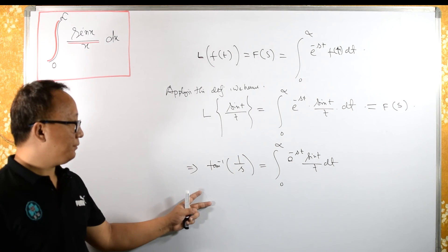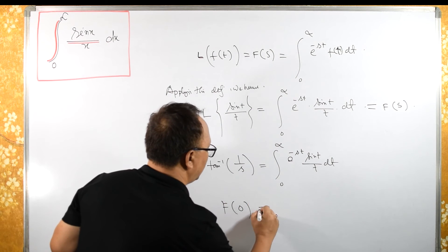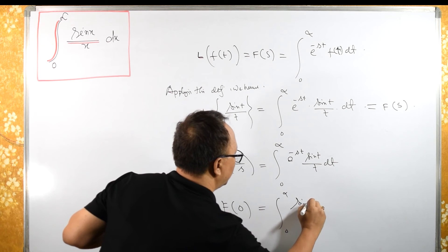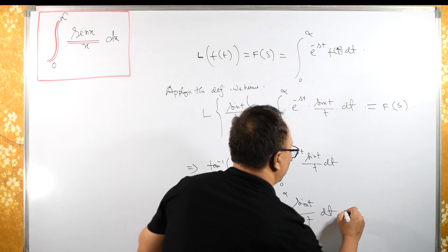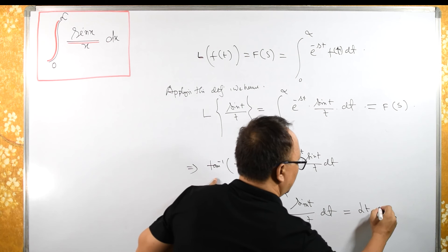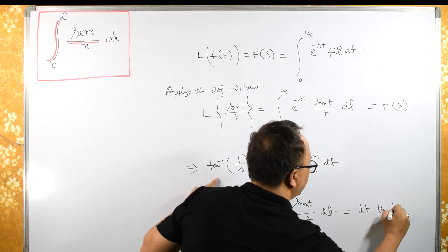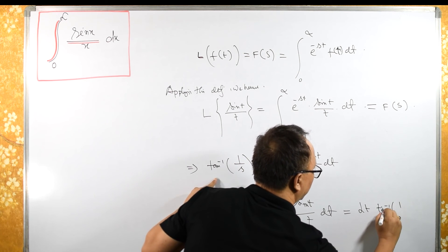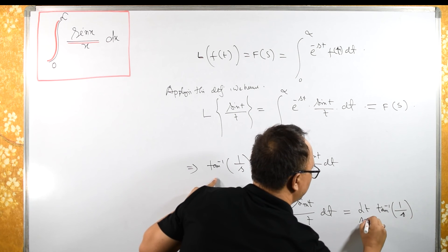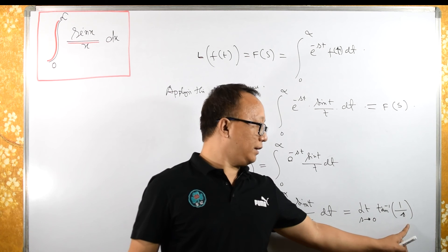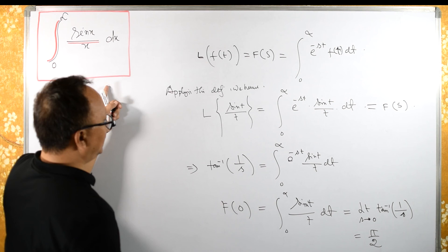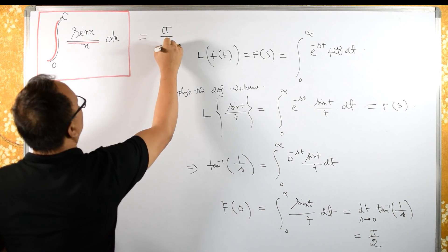Now, f(0) = ∫₀^∞ sin(t)/t dt, which equals the limit of arctan(1/s) as s tends to 0. The limit of arctan(1/s) as s tends to 0 is π/2. Therefore, this equals π/2.